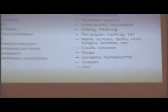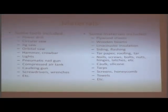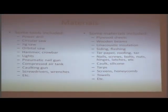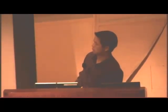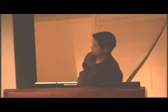Here are some of the materials used for this project. Since it's a fairly intensive construction project with a deadline, we used all sorts of materials. Tools included a power drill, circular saw, jig saw, hammer, pneumatic nail gun, and compressor air tank. Materials included plywood, wood, insulation, siding, tar paper, nail screws, silicone, and other construction-related supplies.